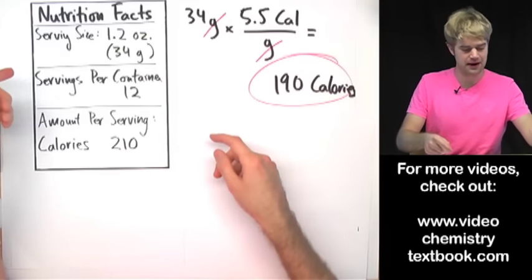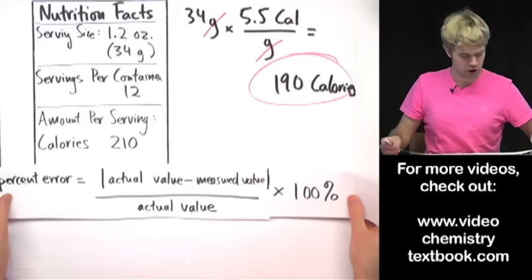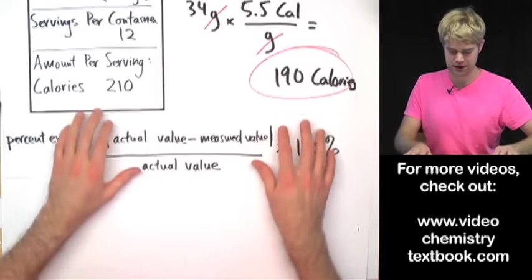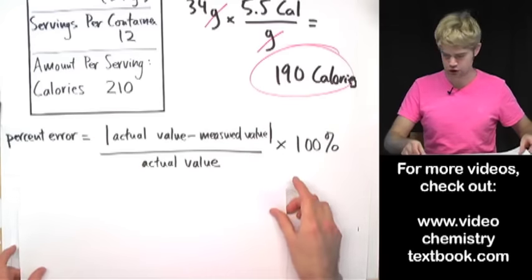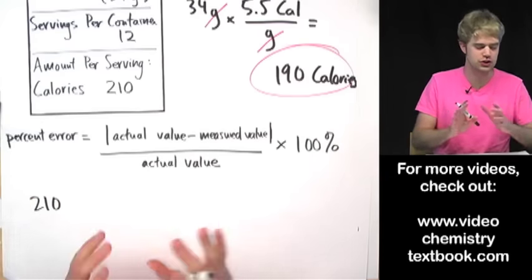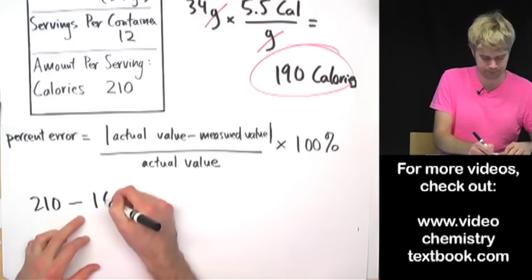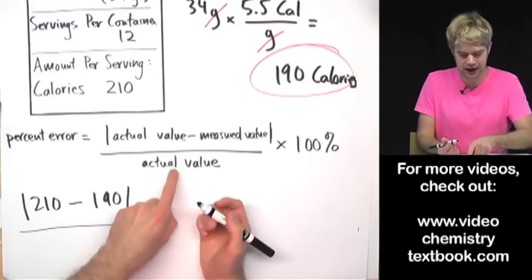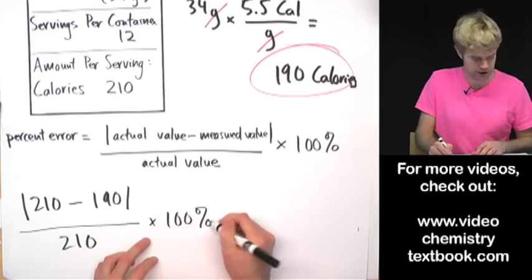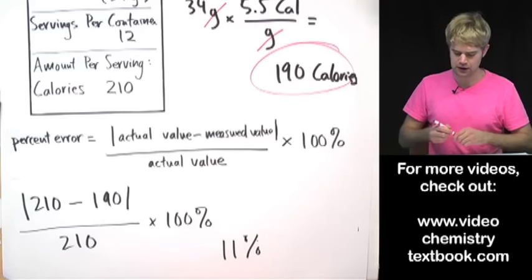We got 190 calories, but the back of the package says 210 calories per serving, so we were a little off. To calculate percent error: take the actual value (210) minus the measured value (190), take the absolute value of that, divide by the actual value (210), and multiply by 100%. This gives us a percent error of about 11%.